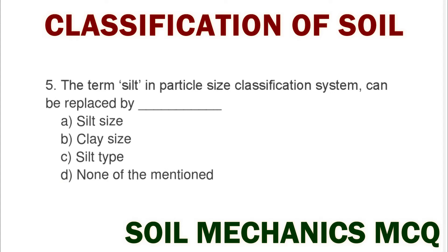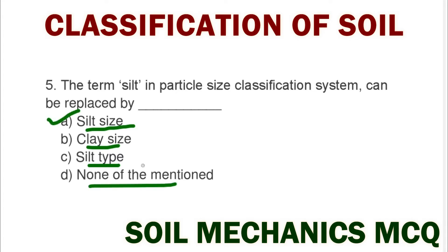Next question: the term silt in the particle size classification system can be replaced by option A silt size, option B clay size, option C silt type, option D none of mentioned. The correct answer is option A silt size.